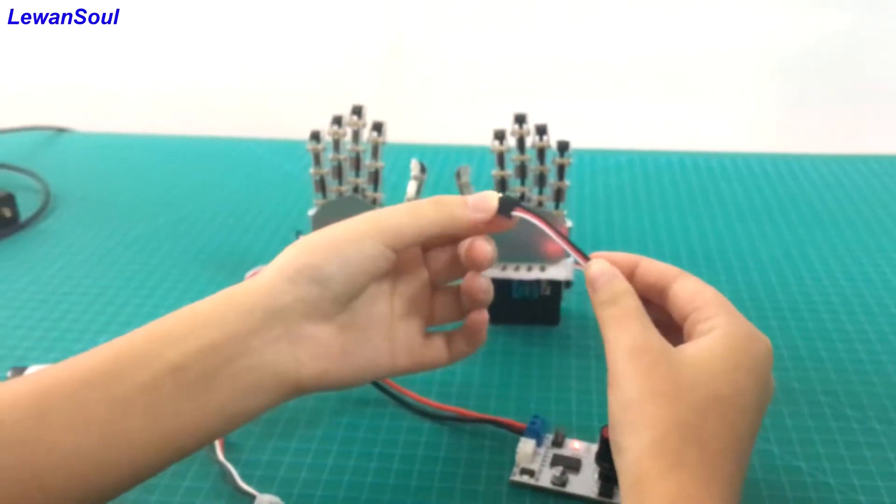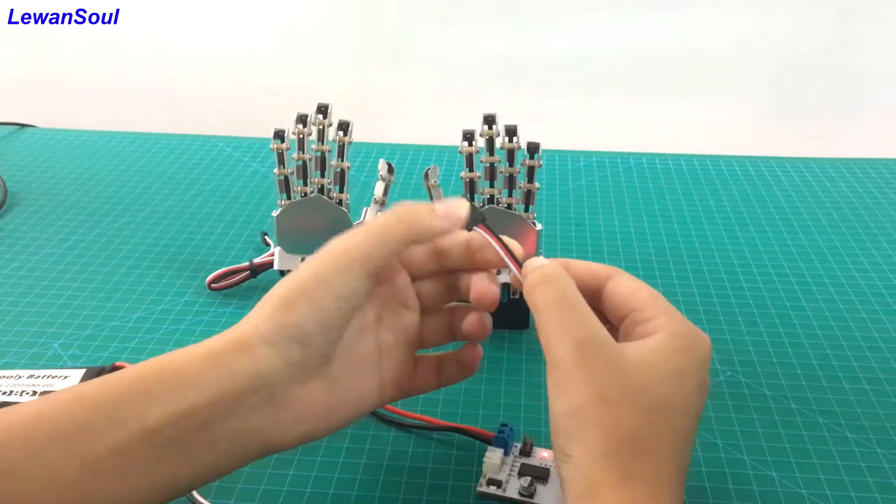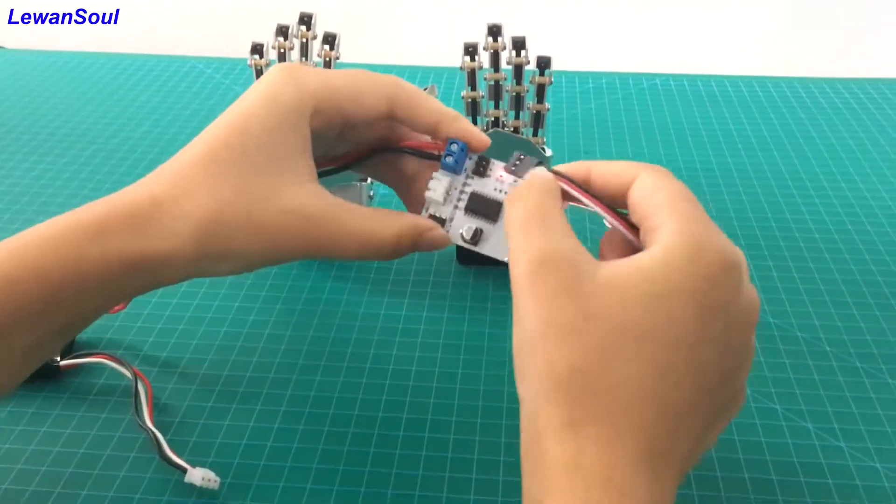If you look at the cables, there are three of them. The white one, the red one, and the black one. You need to plug the white one to the signal port, just like this.